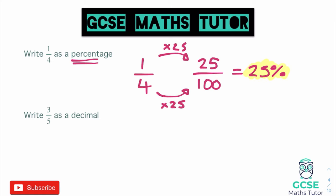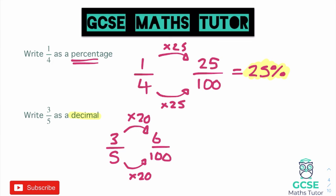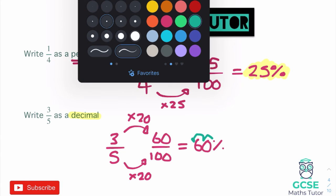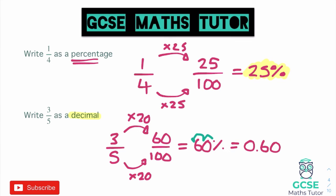To write 3 over 5 as a decimal, we first turn it into a percentage. We need to multiply the denominator by 20 to make it out of 100, and multiply the top by 20 as well: 3 times 20 equals 60. That's 60 per 100, so it's 60 percent. To write that as a decimal, we hop the decimal two jumps by dividing by 100, giving us 0.60. You don't need the zero at the end, so the final answer is 0.6.